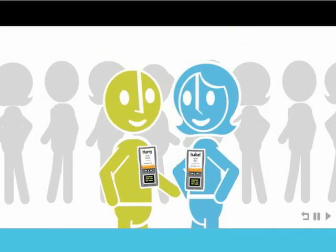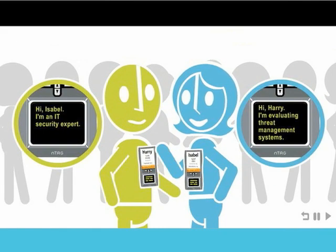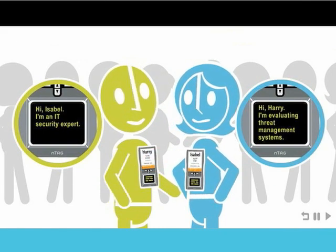Next, Harry's n-tag lights up and lets him know that he has things in common with Isabelle. This makes networking easy and gets people talking.